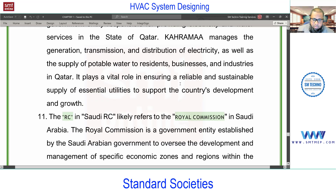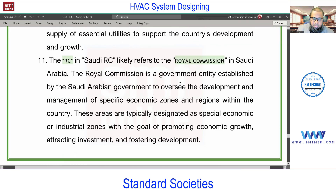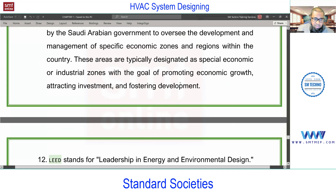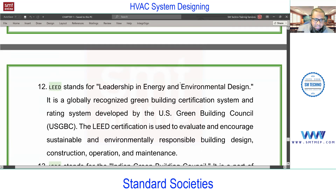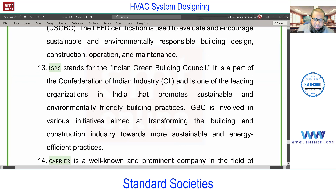If you're in Saudi Arabia, we have the Royal Commission — Royal Commission for Jubail, Royal Commission for Yanbu, Royal Commission for Riyadh, etc. They have their own standards, especially for approval of ministry or private projects. You need to follow Royal Commission standards. Next, LEED, IGBC, and USGBC are all related to green building.